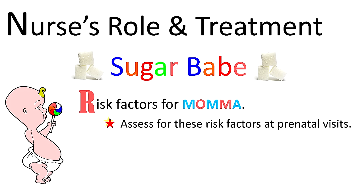A is for adverse effects of gestational diabetes — we talked about these in our patho discussion. You're going to be looking for preeclampsia, hypertension, protein in the urine, urinary tract infections, and vaginal yeast infections. She also has a risk of C-section because of the large baby, preterm labor, and then hypoglycemia and respiratory distress in the baby.